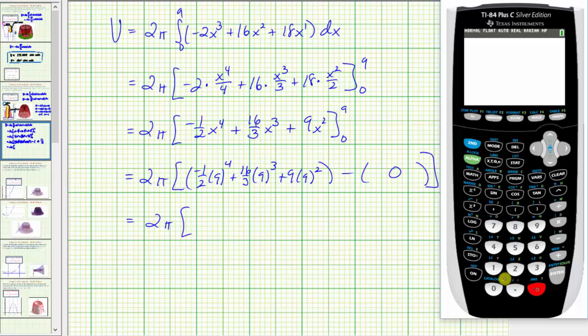So we have negative one half times 9 raised to the power of 4, plus 16 thirds times 9 to the third, then we have plus 9 times 9 squared. We can do exponent 2 or just use the squared key here and enter. So we get 1336.5.